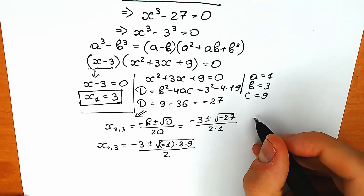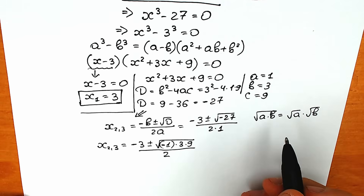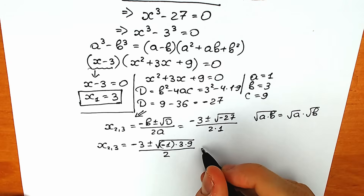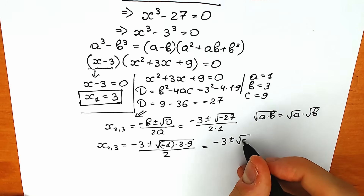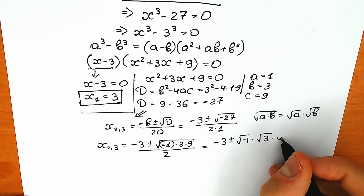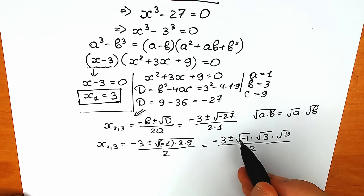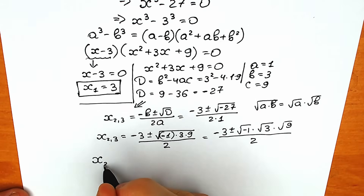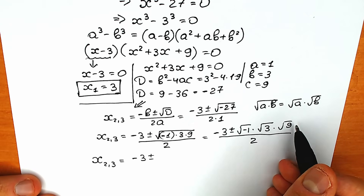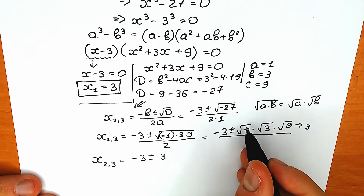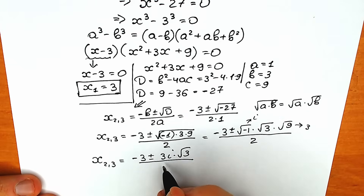Using the property that the square root of a times b equals square root of a times square root of b — which works only for products, not addition — we get square root of minus 1 times square root of 3 times square root of 9. Since square root of 9 is 3 and square root of minus 1 is the imaginary unit i, we get x₂,₃ equals minus 3 plus or minus 3i√3, all divided by 2.